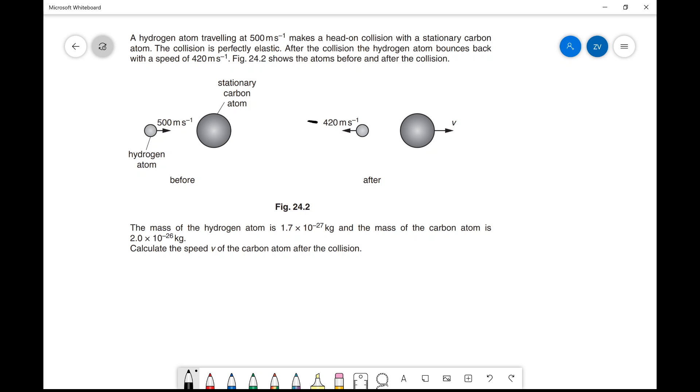The carbon atom moves to the right with speed v, which is what we need to find. We have the two masses: the mass of the hydrogen atom is 1.7 × 10^-27 and the mass of the carbon atom is 2.0 × 10^-26.